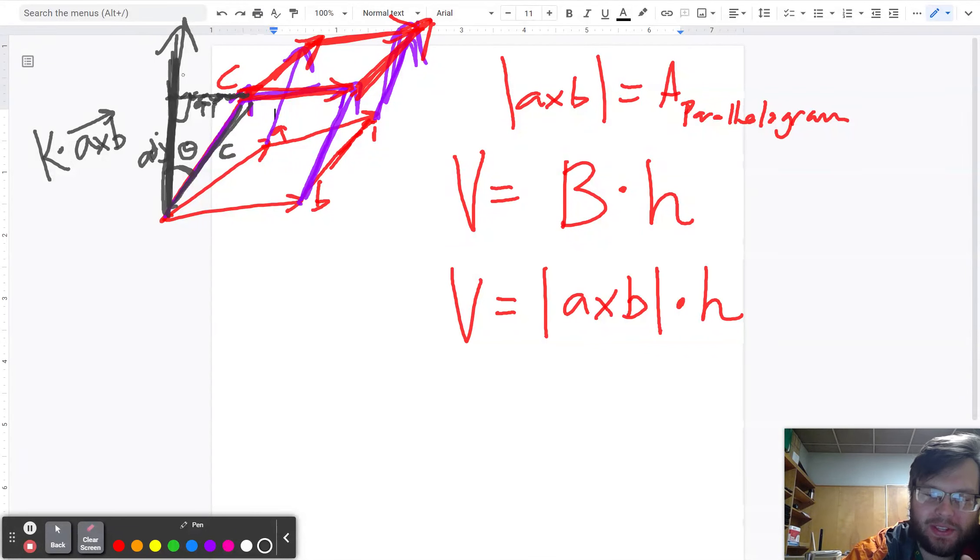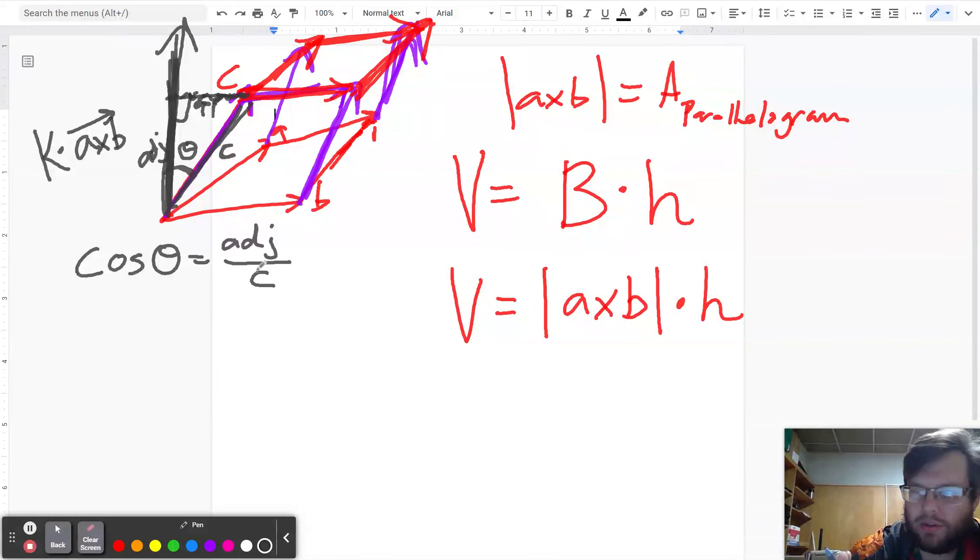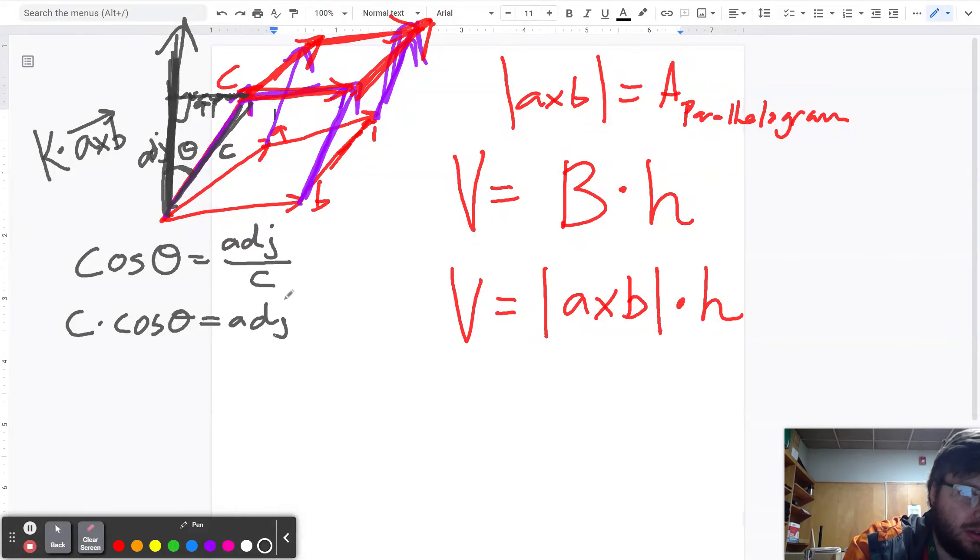theta is adjacent to the height of the parallelopiped. Well, that means that cosine of angle theta is equal to adjacent over C. Because that's just how cosine works. Cosine is always adjacent over hypotenuse. So what that means is C times cosine theta is equal to the adjacent part. And that's the height right there.